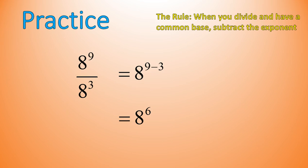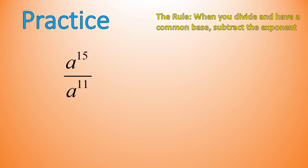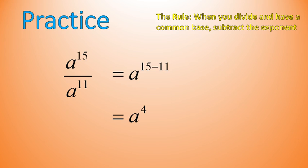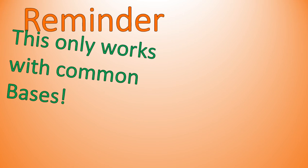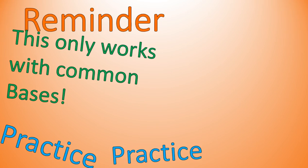Here is the next one: A to the power of 15 divided by A to the power of 11. Pause the video and try that one out. Welcome back. Our base is A — it's a subtraction question: 15 minus 11 gives you 4. So the final answer is A to the power of 4. This is pretty quick once you get the rule down. You don't have to expand things out, which saves an awful lot of time. Remember, this only works with common bases — so practice, practice, practice.